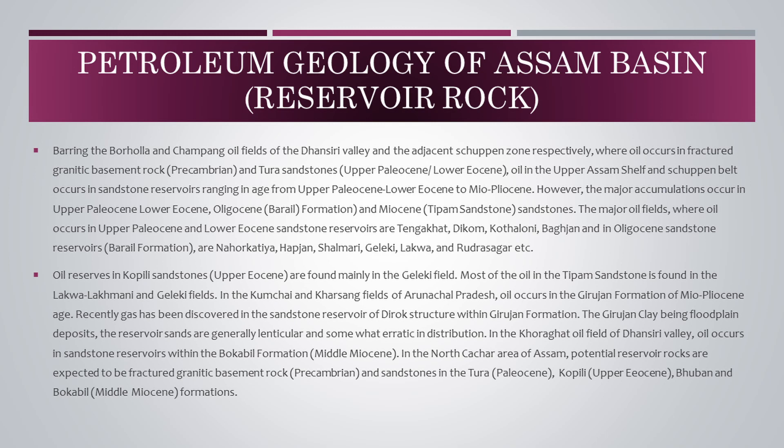The major oil fields where oil occurs in Upper Paleocene and Lower Eocene sandstone reservoirs are Tengakhat, Dikom, Kothaloni, and Bagjam. In Oligocene sandstone reservoirs, Barail formation, the fields are Nahorkatia, Hapjan, Shalmari, Gheleki, Lakhwa, and Rudrasagar, etc. Oil reserves in Coppili sandstones, Upper Eocene, are found mainly in the Gheleki field.